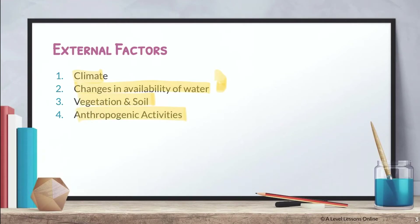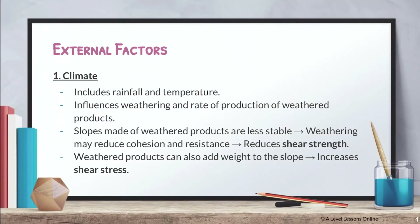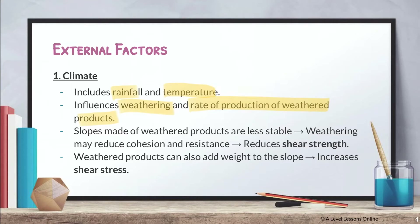Firstly, we have climate — the most important factor. I strongly encourage you to argue that climate is the most important because it is a macro factor and is completely uncontrollable; human activities we can control, but climate is up to nature. Climate includes rainfall and temperature, which influence weathering and the weight of weathered products. In areas with high temperatures, high humidity, or high rainfall, chemical and physical weathering processes are sped up.